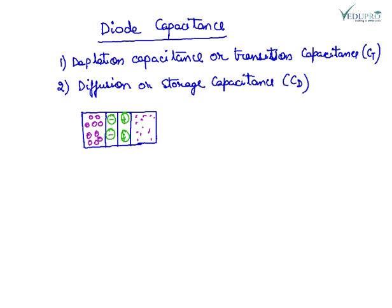A PN junction behaves like a capacitor. The depletion region behaves as the dielectric of the capacitor, and the P and N regions behave as the plates of the capacitor, with one being the negative plate and the other the positive plate. So a PN junction can be thought of as a capacitance.